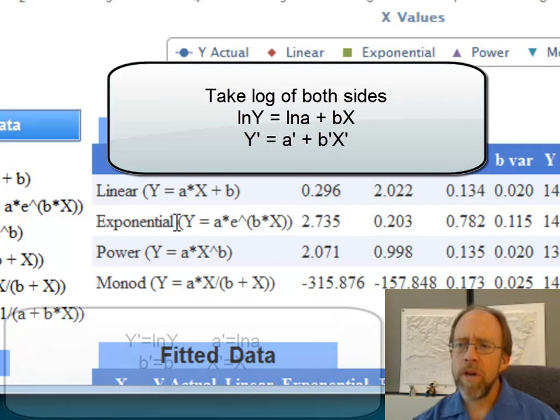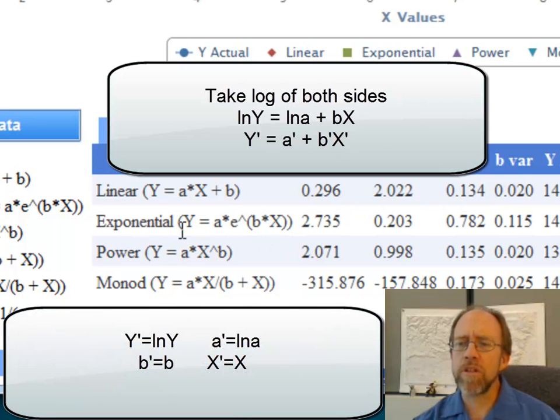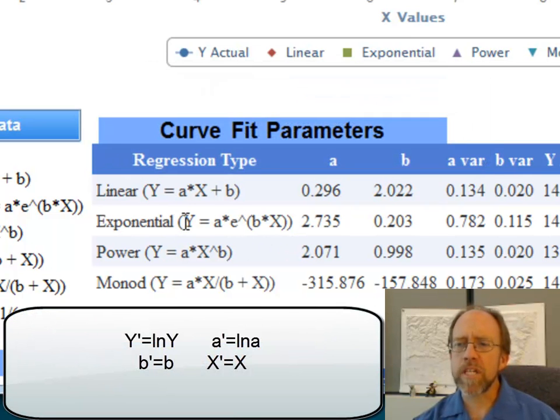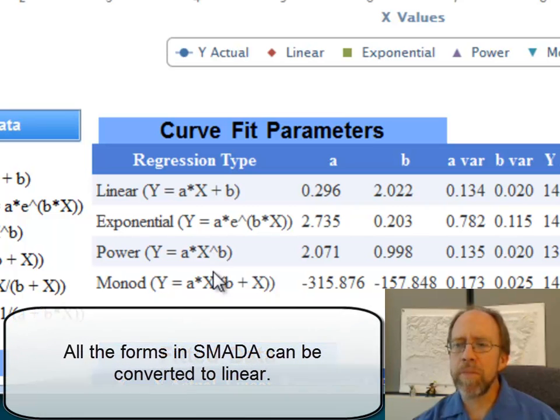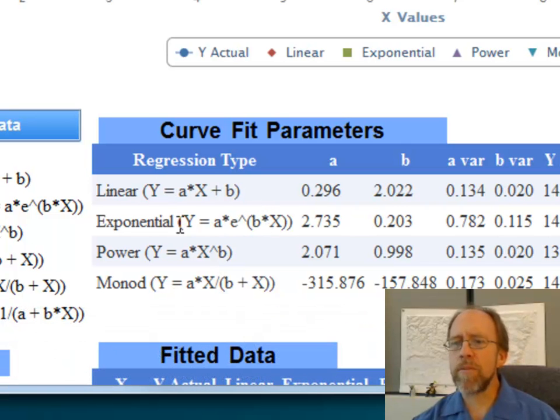So, for example, if you're working with the exponential form, look what happens if you take the natural log of both sides of this exponential equation. Natural log of y equals the natural log of a times e to the bx. Well, that ends up being natural log of a plus bx, and that, if you look at it, is the same format as the linear.